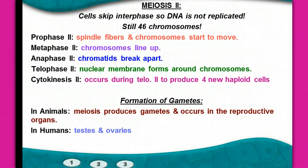In meiosis II, the cells completely skip interphase, so the DNA is not replicated — there are still only 46 chromosomes. We go through the whole process again: spindle fibers and chromosomes start to move, they line up in the middle during metaphase, the chromatids break apart, the nuclear membrane forms around the chromosomes, and in cytokinesis II we have four new haploid cells.